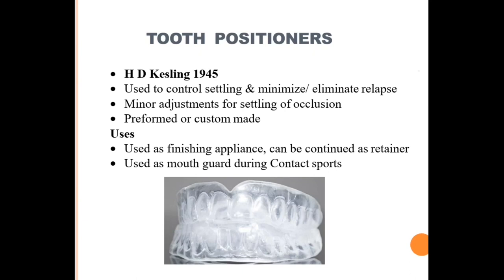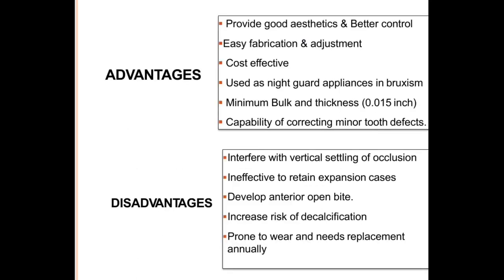Several other aesthetic retainers are available on the market today. The advantages of aesthetic retainers include good aesthetics, better control, easy fabrication and adjustment, cost-effectiveness, and use as a night-guard in bruxism cases. They can also correct minor tooth defects using minimum thickness sheets. Disadvantages include interference with vertical settling of occlusion, ineffectiveness in expansion cases, risk of developing anterior open bite, increased risk of decalcification in certain areas, susceptibility to wear, and need for annual replacement.